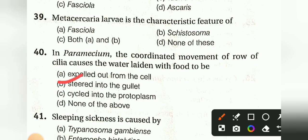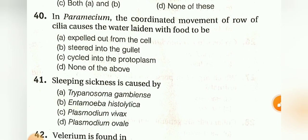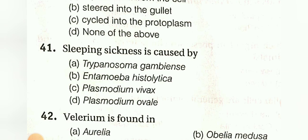Sleeping sickness is caused by: Trypanosoma gambiense, Entamoeba histolytica, Plasmodium vivax, or Plasmodium ovale. The answer is Trypanosoma gambiense. Note: the answer given in the video as Plasmodium vivax appears to be an error.